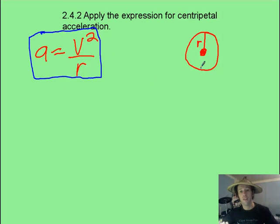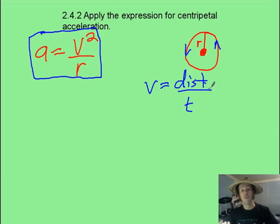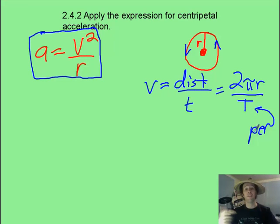There's a second one that you should understand where it comes from. Let's say we're trying to find the velocity of something going in circular motion. Velocity, or speed, is distance over time. The distance around the circle is the circumference, which is 2πr. The time is going to be capital T, which represents the period. Period is the time it takes to get around the circle.